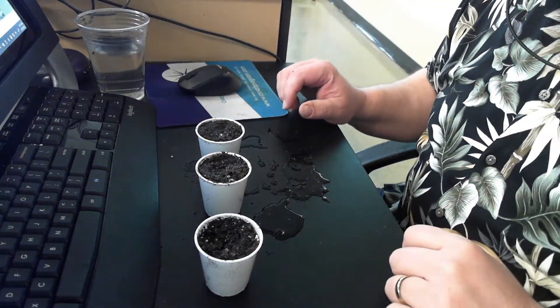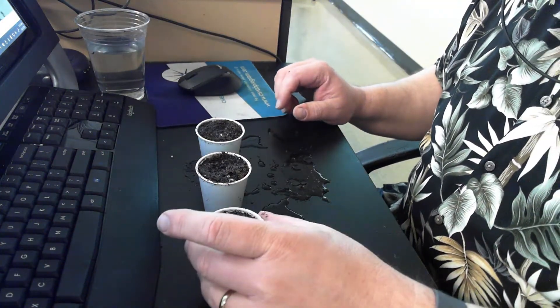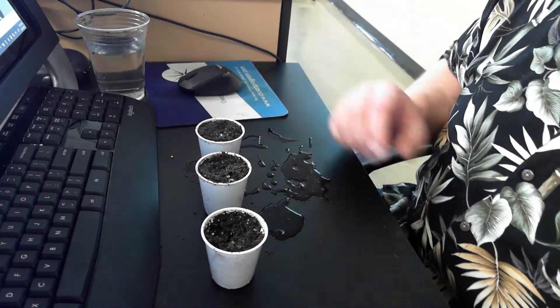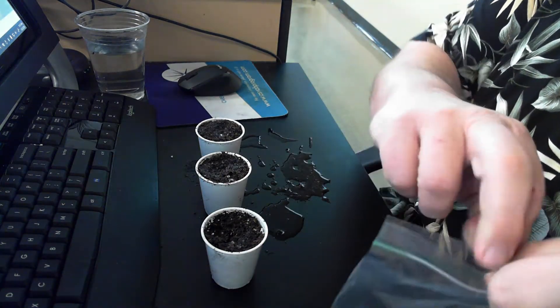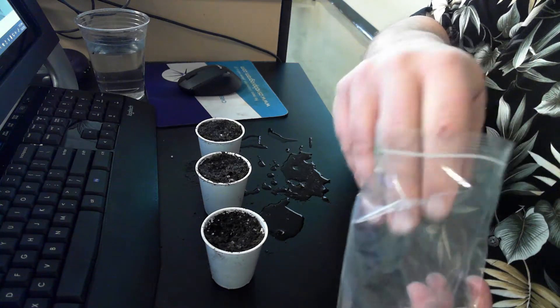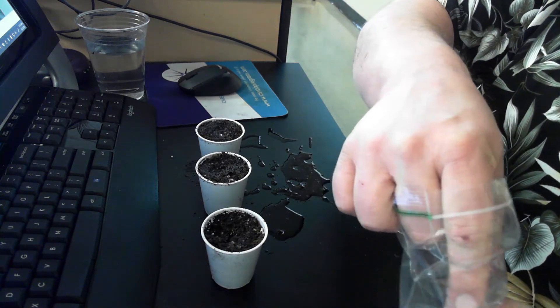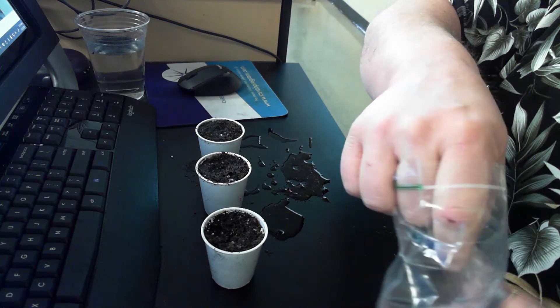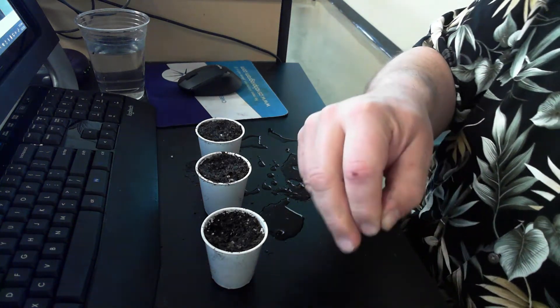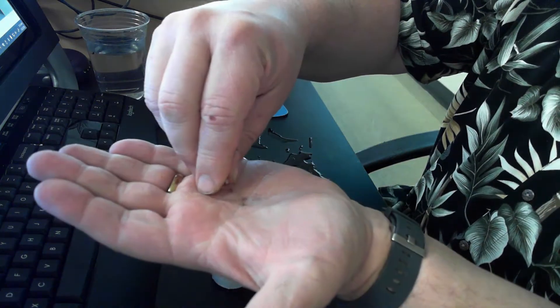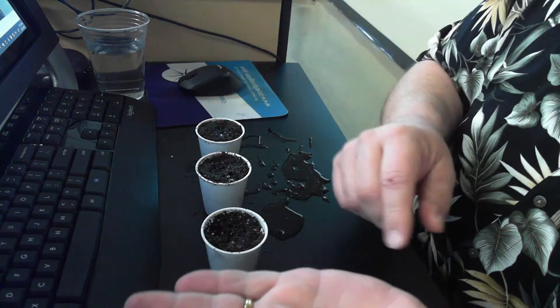then I know that I have gotten to the point where I have good moist soil and I'm ready for my seeds. We are going to plant exactly one radish seed in each cup.